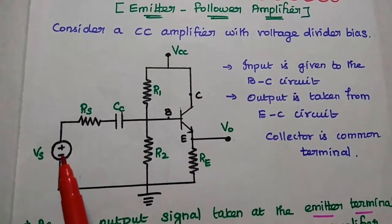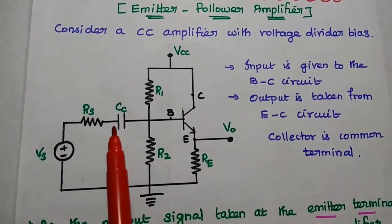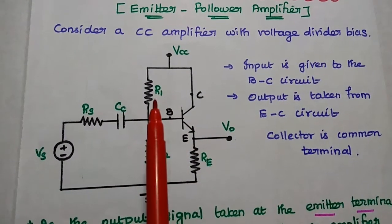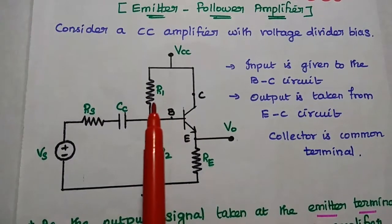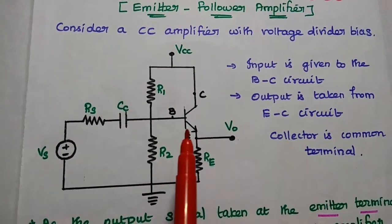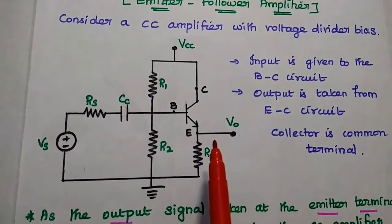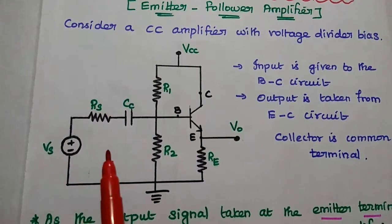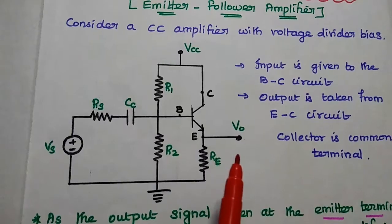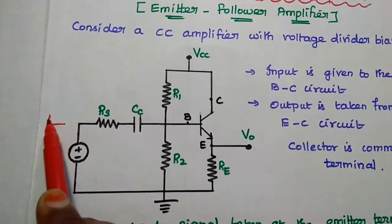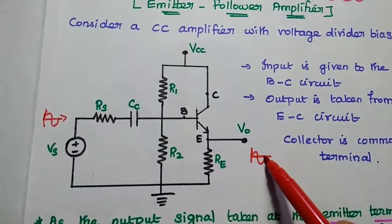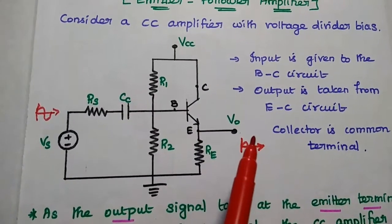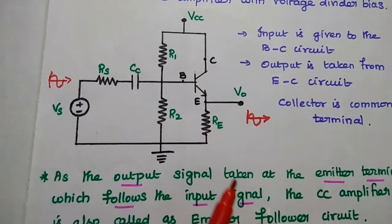Here VS represents voltage signal source. RS represents source resistance. The coupling capacitor is mainly used to provide DC isolation between the input and the amplifier circuit. R1 and R2 resistors form the voltage divider circuit at the input side to provide proper biasing to the transistor. The output is similar to the input — the output is taken at the emitter terminal which follows the input signal as such. There is no phase change in voltage or current. Hence it is called as emitter follower.